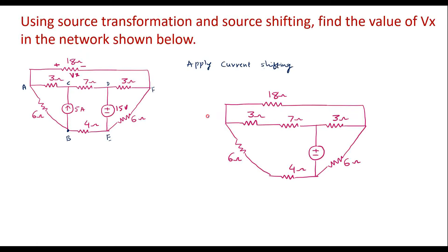So, equivalent circuit — everything will be same. I will connect this current from node B to node A and between A to C. Here we have C. I will connect the current source like this. The magnitude of current source will be same. This is known as current shifting. Here the current was flowing from B to C; I made it to flow from B to A and A to C, which is the same.